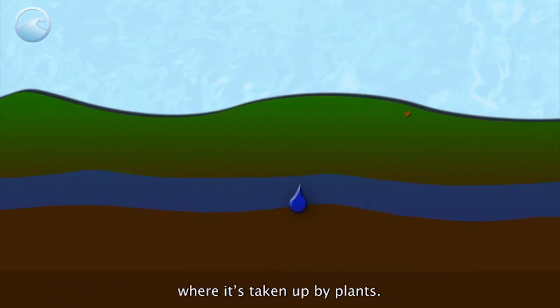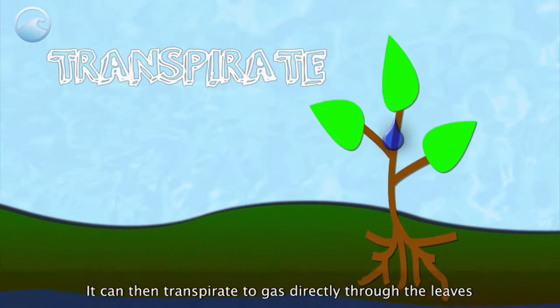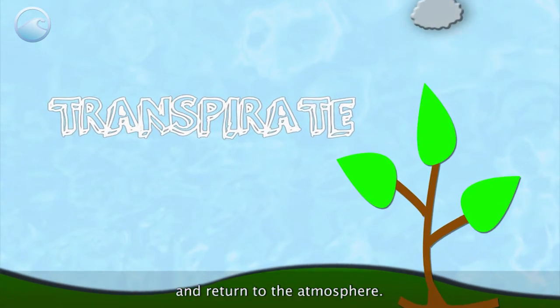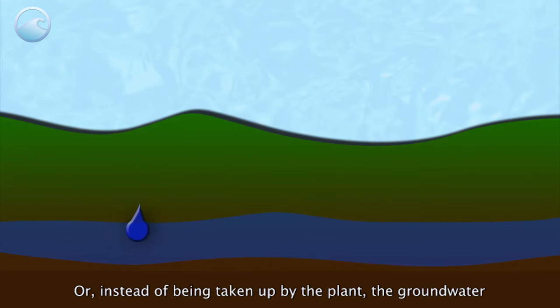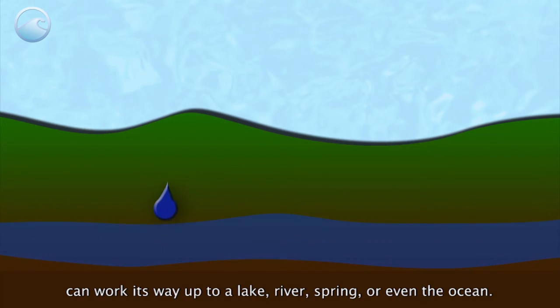Where it's taken up by plants, it can then transpire to gas directly through the leaves and return to the atmosphere. Or instead of being taken up by the plant, the groundwater can work its way up to a lake, river, spring, or even the ocean.